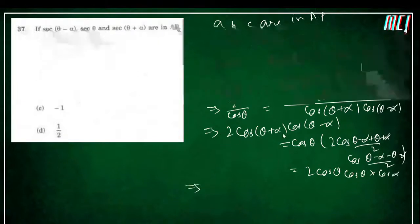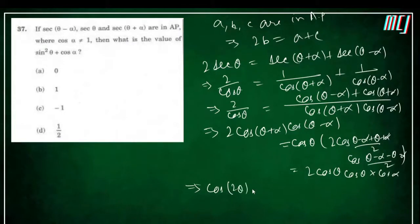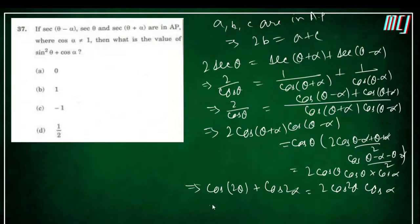Applying the product-to-sum formula on the left side: 2cos(θ+α)cos(θ−α) = cos(2α) + cos(2θ). So: cos2α + cos2θ = 2cos²θ·cosα. Expanding using double angle: cos2α = 2cos²α − 1 and cos2θ = 2cos²θ − 1.